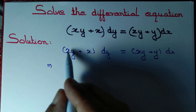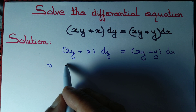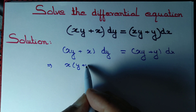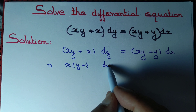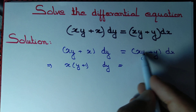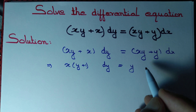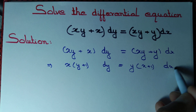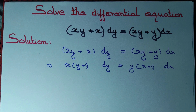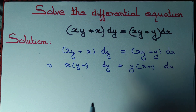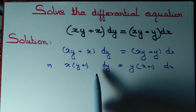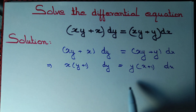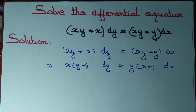Observe that we can factorize this expression and write as x into (y + 1). This one can also be factorized — we can take y common: y into (x + 1), dx as it is. Now we can separate variable y to the left hand side and variable x to the right hand side.